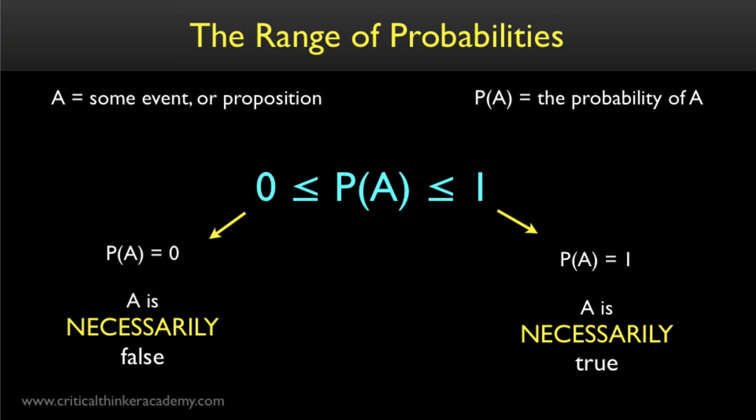Similarly, if it has probability zero, that means it must be false. It can't possibly occur. And we say that it refers to a necessarily false proposition, or that the event is an impossible event.